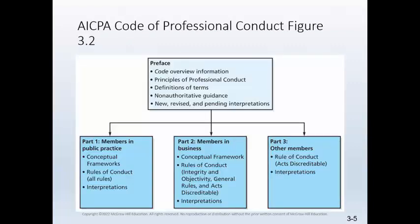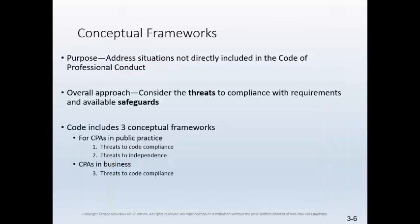This diagram shows the sections of the AICPA Code of Professional Conduct. The preface initially presents overview information on the code, then lists the principles of professional conduct and gives definitions of terms used in the code, information on non-authoritative guidance, and new, revised, and impending interpretations. Finally, the preface includes recent changes in the code. The code is then separated into three parts to address the relevant information for different types of AICPA members: Part One is for members in public practice, Part Two is for members in business, and Part Three is for other members. All rules apply to CPAs in public practice, but some do not apply to members in business and other CPAs that may be retired or unemployed.